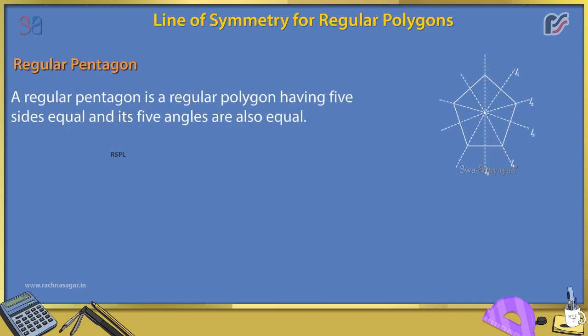Regular pentagon. A regular pentagon is a regular polygon having five sides equal and its five angles are also equal. A regular pentagon has five lines of symmetry.